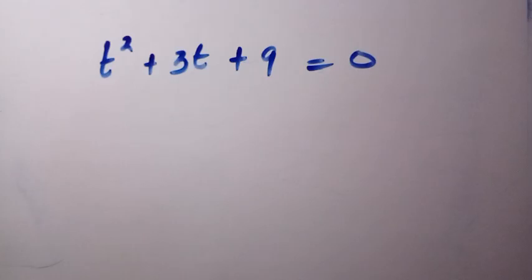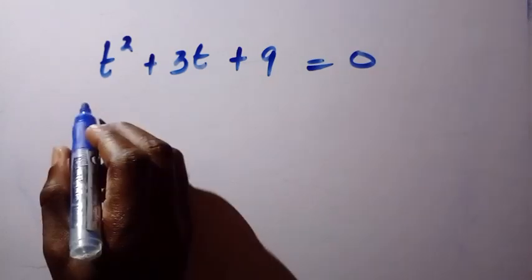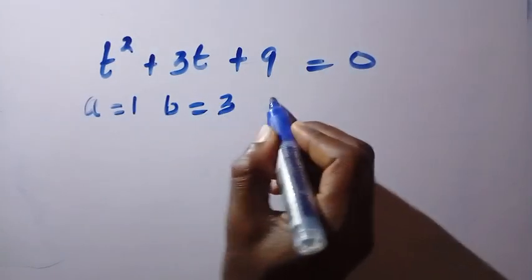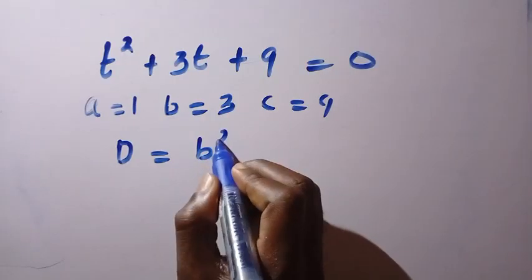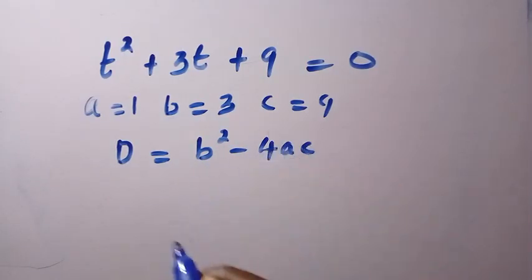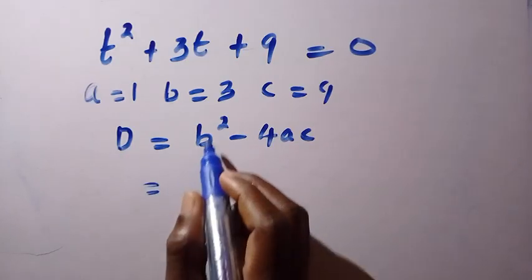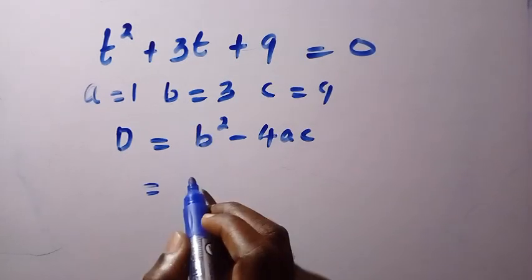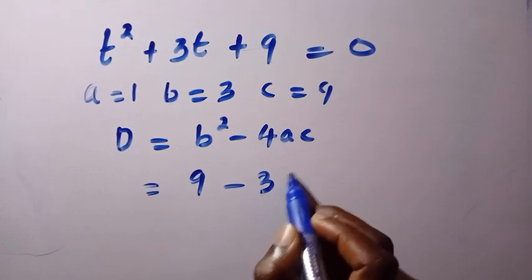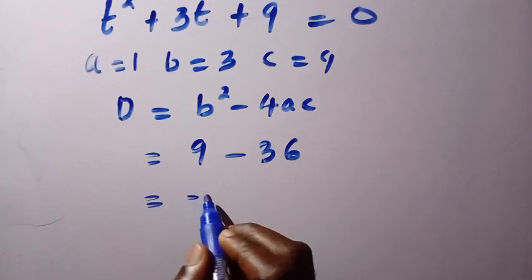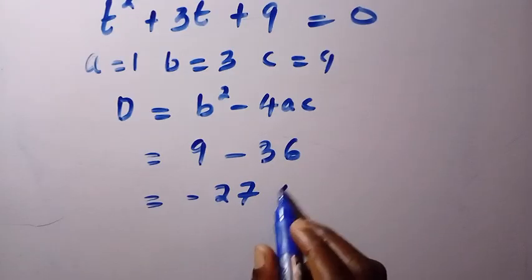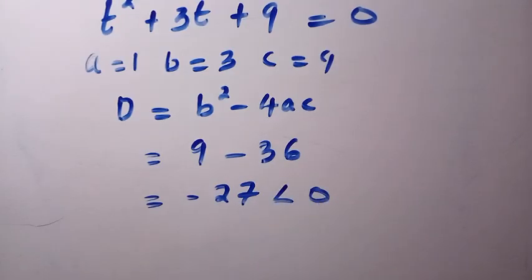The quadratic factor requires two more answers. We identify a equals 1, b equals 3, and c equals 9. Using the discriminant formula, d equals b squared minus 4ac, we get 9 minus 36, which gives us minus 27. Since the discriminant is less than 0, the remaining roots are complex numbers.